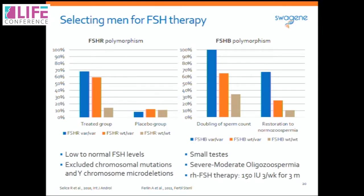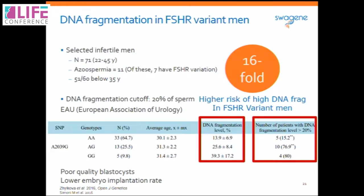Recent studies have found a link between DNA fragmentation levels and the FSH receptor polymorphism. The presence of the FSH receptor polymorphism increases the risk of DNA fragmentation in men by 16-fold. DNA fragmentation levels are completely normal in men with wild type, whereas in men carrying one or two copies of the variant they are significantly increased. Specifically, 80% of men with FSH receptor variation had high DNA fragmentation levels, compared to only 15% of wild-type men.